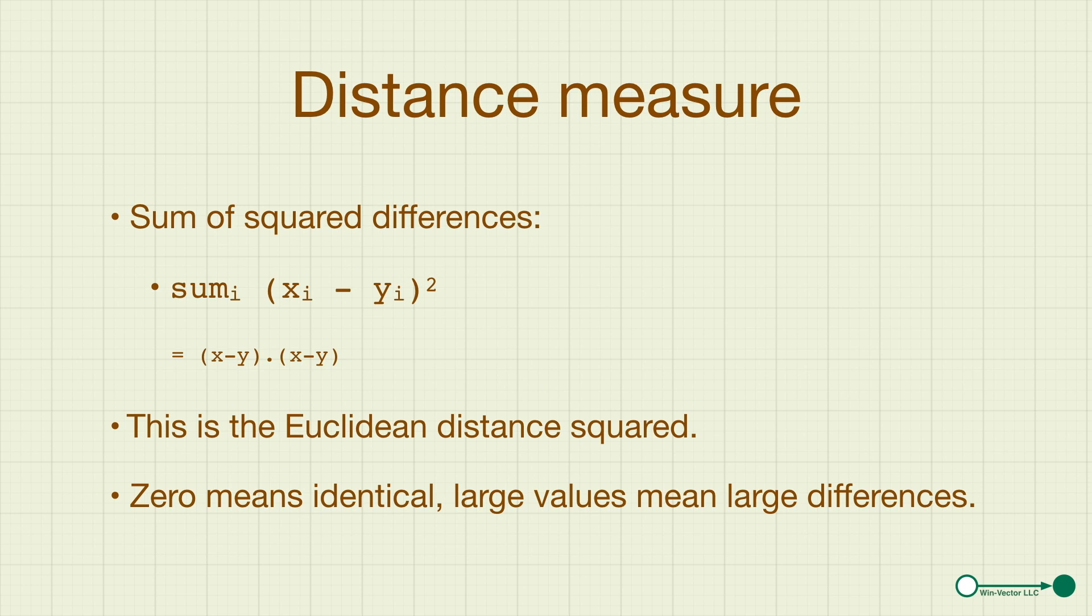For pairs of vectors, there's a natural distance measure. There's a number of distance measures, but the one we'll use is the sum of square differences, and it's defined as we sum over all cells, the difference in cells between the corresponding cells and the vectors, and square it. But it turns out that is just the difference in the vectors dotted against itself. This is the Euclidean distance, or it's the Euclidean norm of the distances, again, a difference, again, squared. Again, the interpretation is zero means identical, large values mean we're experiencing large differences.